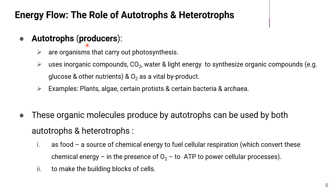Autotrophs are mainly producers — organisms that carry out photosynthesis. They use inorganic compounds such as carbon dioxide, water, and light energy to synthesize organic compounds such as glucose and other nutrients, and produce oxygen as a vital byproduct. This oxygen is important for living organisms, including humans, to breathe. Examples of autotrophs include plants, algae, certain protists, certain bacteria, and archaea.